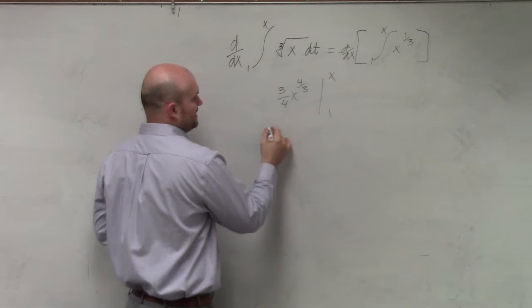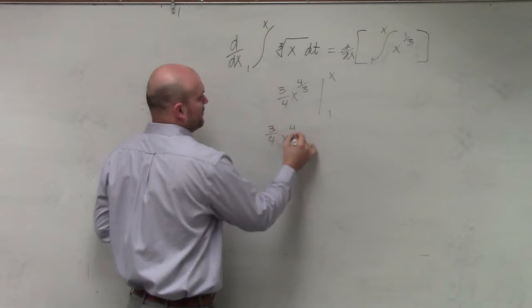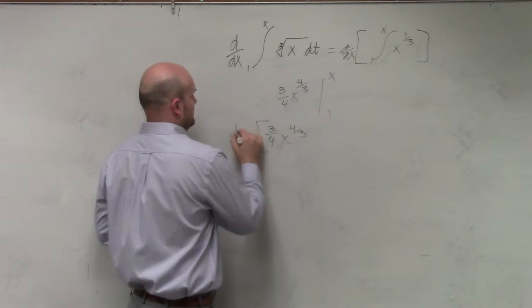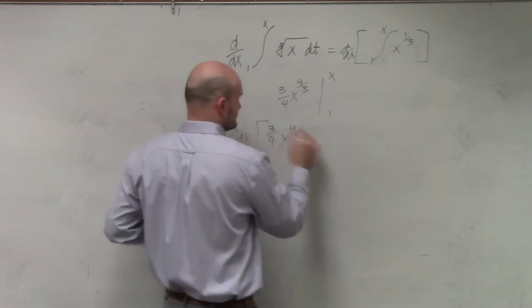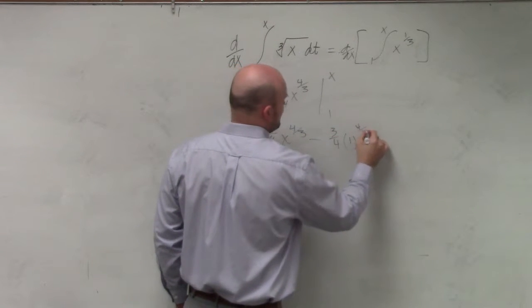So therefore, that's going to be 3/4 x to the 4/3, d over dx, minus 3/4 times 1 to the 4/3.